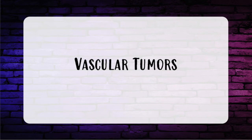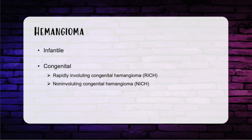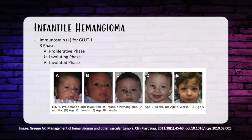Starting with the most heavily tested topic — hemangiomas — there are two main types: infantile versus congenital, distinguished by presence or absence at birth. Infantile hemangioma is the most common benign tumor of infancy, with a three-to-one female-to-male ratio. The vast majority are isolated lesions; if greater than five tumors are present, there's risk for hepatic lesions, so get an abdominal ultrasound. 60% are on the head and neck, about 25% on the trunk. The buzzword: infantile hemangioma immunostains positive for GLUT1 transport protein, whereas congenital hemangioma does not.